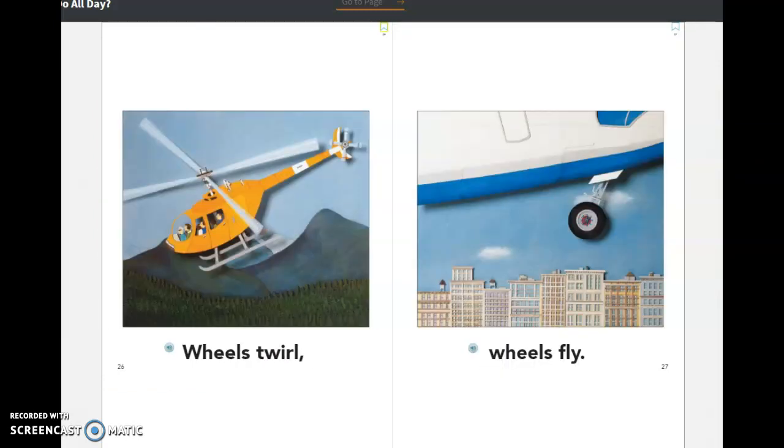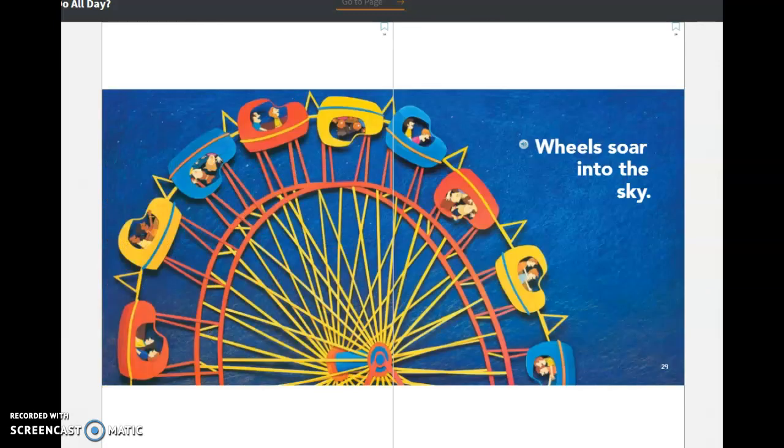Wheels twirl. Wheels fly. Even though you're in an airplane, it still has those wheels underneath when it is going down the runway or when it is starting and stopping. Wheels soar into the sky. There they are on a ferris wheel. That's a huge type of wheel.